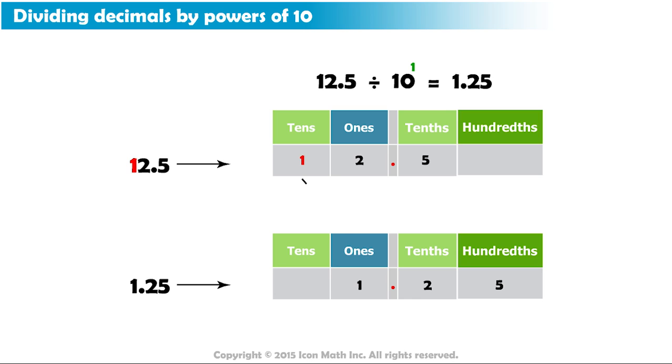The 1 in the original number moved from the tens place to the ones place, because we divided its original value of 10 by 10 and got 1. And 2 moved from the ones place to the tenths place, because we divided its original value of 2 by 10 and got 2 tenths. While 5 moved from the tenths place to the hundredths place, since we divided its original value of 5 tenths by 10 to get 5 hundredths. In other words, each digit moved one place to the right, because it was multiplied by 1 tenth.